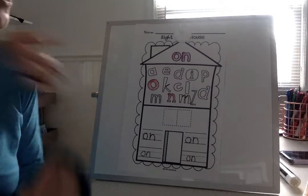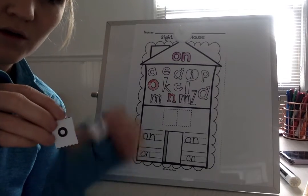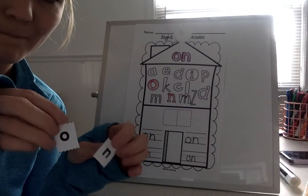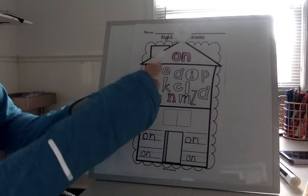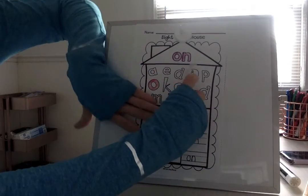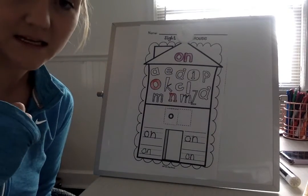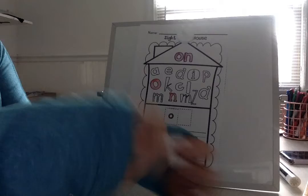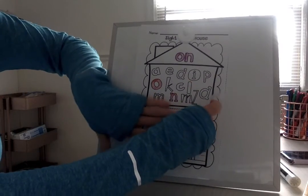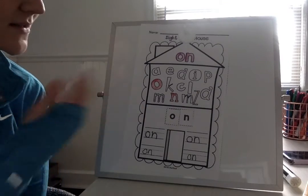I'm going to cut them. Now I'm going to look — which letter goes first, the O or the N? The O. Very good. So I'm going to go ahead and glue the O in the first box. And then what letter comes next? N. Very good. So let's go ahead and tape it down. We are done with our sight word house.